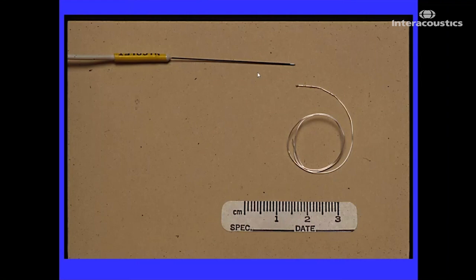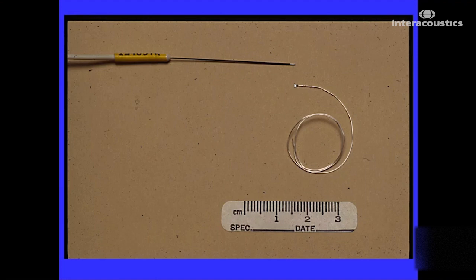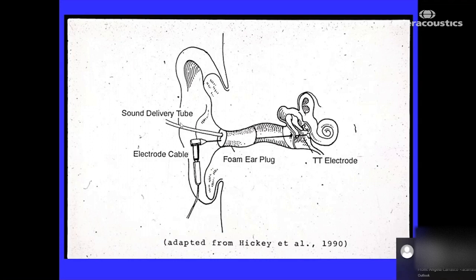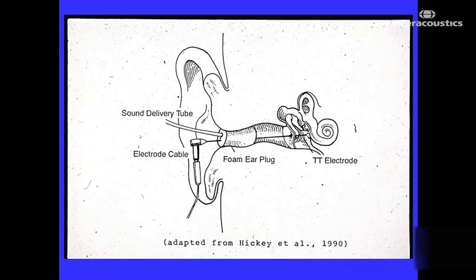This is an electromyogenic electrode — an EMG electrode — which, if you reverse the input and output, can also be a recording electrode. It's designed to penetrate the TM to rest on the promontory. Here's a round window electrode used for intraoperative monitoring when the middle ear cavity is exposed. This is a drawing of how the trans-tympanic electrode can be applied: inserted through the foam tip of the sound delivery tube, generally through the lower anterior quadrant of the TM, and then pushed until it touches the promontory.